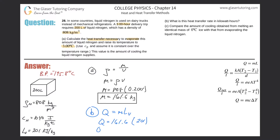The latent heat of vaporization from the tables is 201 kJ/kg. Converting to joules by multiplying by 1000, we calculate 161.6 × 201,000. The result is approximately 3.25 × 10⁷ joules. That's the energy required just for the phase change.